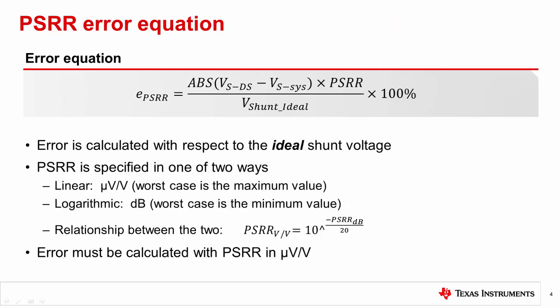The equation to calculate PSRR error is shown here. It is simply the ratio of the change in VOS caused by the change of the power supply, relative to the ideal shunt voltage. VShunt ideal is the product of the load current and the ideal shunt resistor value, ignoring the tolerance and temperature drift of the resistor itself, which will be discussed in other videos. In device datasheets, you will find PSRR specified either linearly in microvolt per volt, or logarithmically in decibels. Note that the worst case value depends on how it is specified.